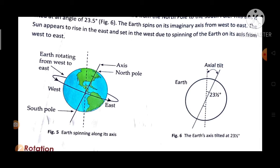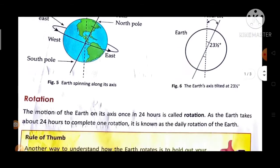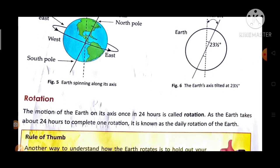Rotation: The motion of the Earth on its axis once in 24 hours is called rotation. As the Earth takes about 24 hours to complete one rotation, it is known as the daily rotation of the Earth.